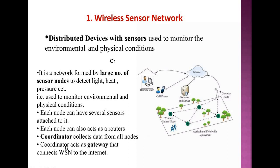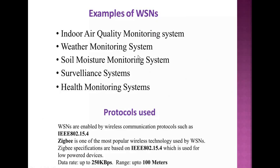A coordinator collects data from all nodes and acts as a gateway that connects the network to the Internet. Examples of wireless sensor networks include indoor air quality monitoring systems — the quality of air can be measured using these sensor networks — weather monitoring systems, soil moisture monitoring systems, surveillance systems, and health monitoring systems.